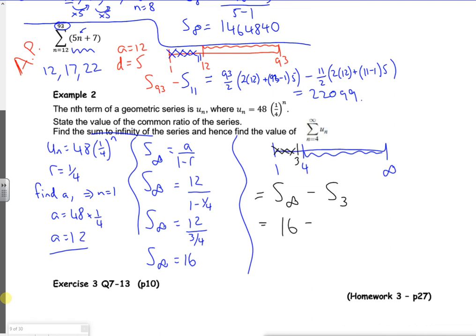So it's 16 take away, now r was a quarter, so I'm going to use one minus r. So it's a, which is 12, one minus a quarter cubed, over one minus a quarter there. If you work it out, it'll give you a quarter. I'm not quite sure if that works, to be honest. Maybe stick that in your calculator and check it, just to be on the safe side, because I'm using the one from the pack. I'm not entirely certain about that. Right, done.